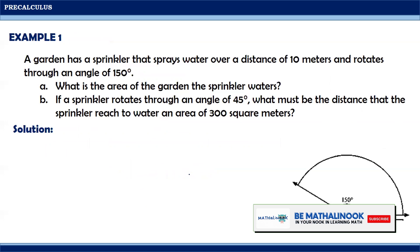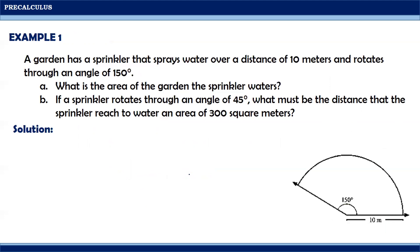Let us consider some examples. A garden has a sprinkler that sprays water over a distance of 10 meters and rotates through an angle of 150 degrees. For letter a, the question is: what is the area of the garden the sprinkler waters? For letter b, if the sprinkler rotates through an angle of 45 degrees, what must be the distance the sprinkler needs to reach to water an area of 300 square meters?